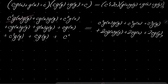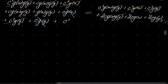Now I will do a bunch of cancellations. c²·g(x)·g(y) cancels with c²·g(x)·g(y). The 2c·g(x)·g(y) terms cancel. c²·g(x) cancels with c²·g(x), and c²·g(y) cancels with c²·g(y). The remaining c·g(x) and c·g(y) terms also cancel. We are left with: g(x)·g(y) + c² = c·g(x) + c·g(y).